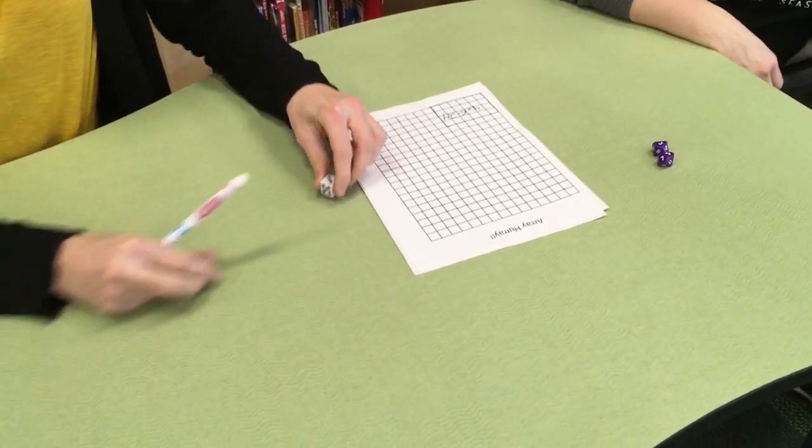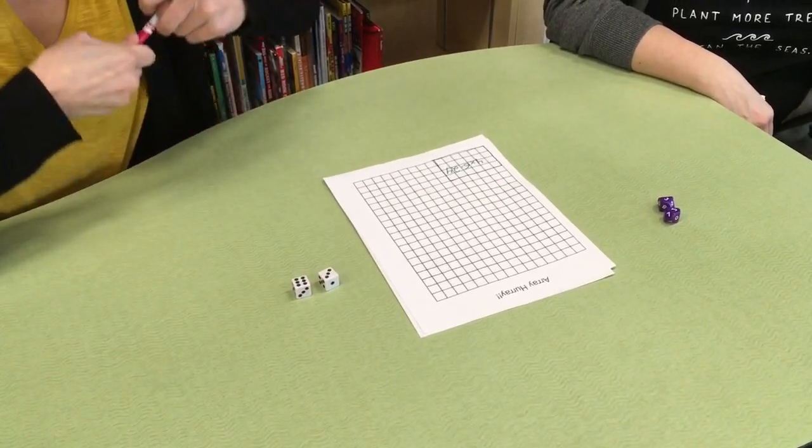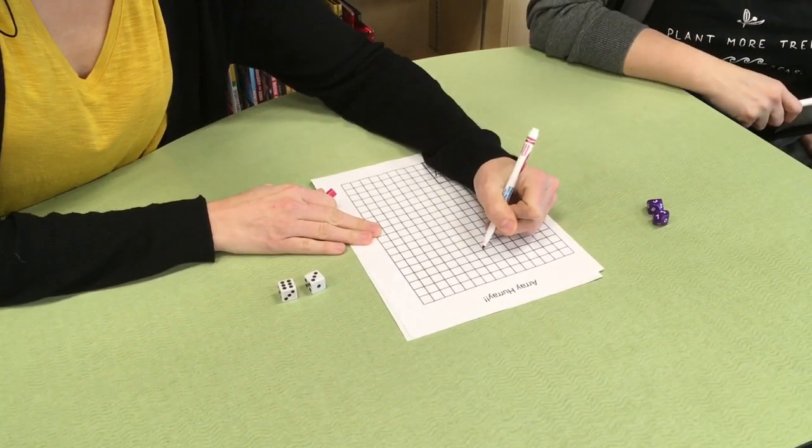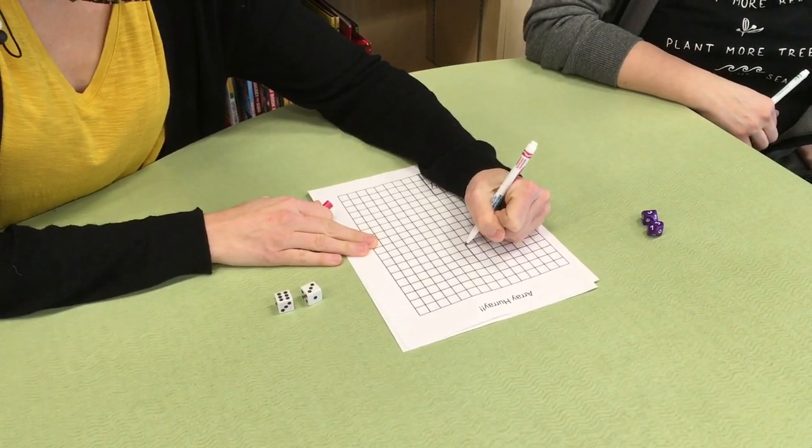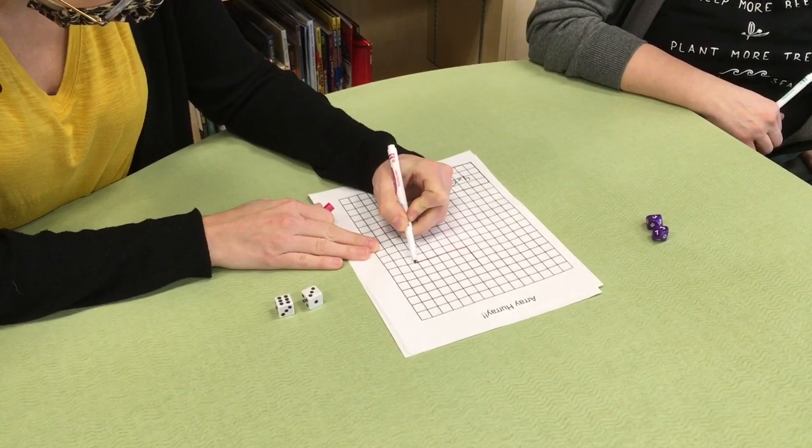I got three times six or three equal groups of six. And now I can do it anywhere on the board that I'd like. I'm going to go right here. So one, two, three, and I'm going to also go across six. One, two, three, four, five, six.